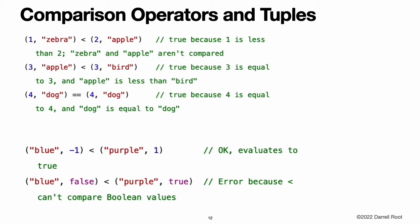You can compare two tuples if they have the same type and the same number of values. Tuples are compared from left to right, one value at a time, until the comparison finds two values that are not equal. Those two values are compared and the result of that comparison determines the overall result of the tuple comparison. If all elements are equal, then the tuples themselves are equal. In the top example, because 1 is less than 2, (1, "zebra") is considered less than (2, "apple") regardless of any other values in the tuples.